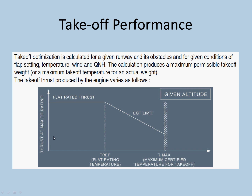What happens is the thrust at max takeoff rating is a certain value — this value is your thrust at max takeoff rating. So TREF is the maximum temperature up to which the engine can produce the flat rated thrust. But after that certain temperature, the thrust will start to drop. It will reach a point where it reaches TMAX, which is the maximum certified temperature for takeoff. You cannot take off beyond that temperature at a given altitude — of course, this chart is made for a given altitude.